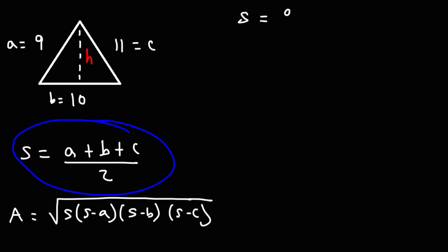So it's A, which is 9, plus B, that's 10, and then plus C, that's 11. 9 plus 10 is 19. 19 plus 11 is 30. And 30 divided by 2 is 15.